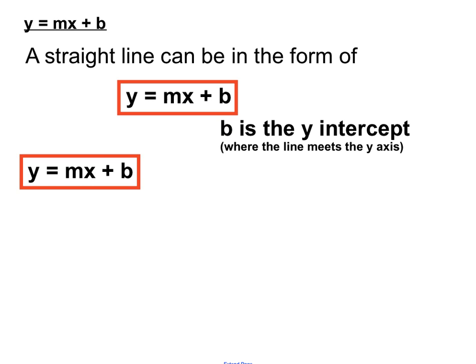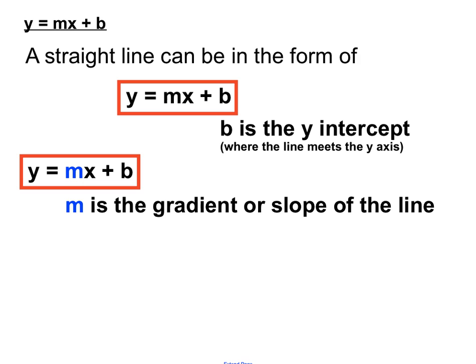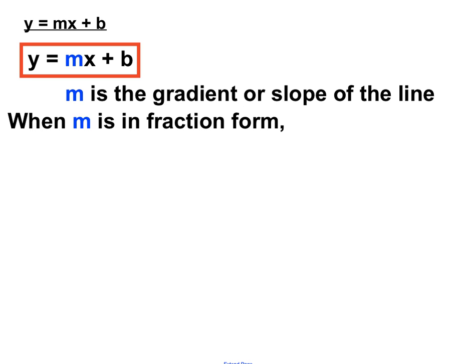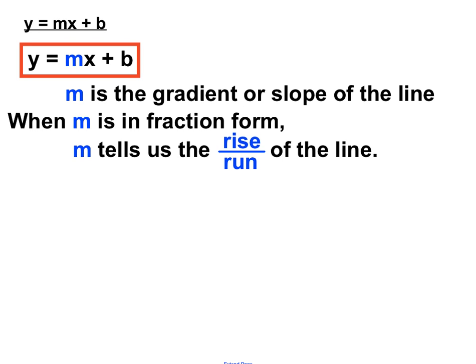Also from this format y equals mx plus b, the m tells us about the gradient or the slope of the line, particularly when it's in fraction form. The number in front of the x tells us how much the line rises compared to how much it runs — how far up you go and how far across you have to go. If m is a whole number such as 5, we turn it into fraction form by putting it over 1, so we have a rise and a run.